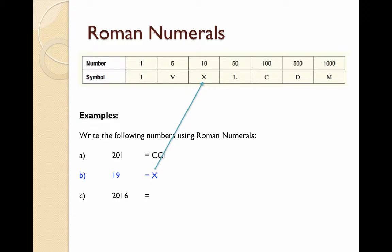19 is a little bit more tricky. We start off with an X which represents 10, but then we need to represent 9. Now from a little bit ago we wrote 9 as an I with an X after it. This means 1 before 10. So XIX is going to be our 19.